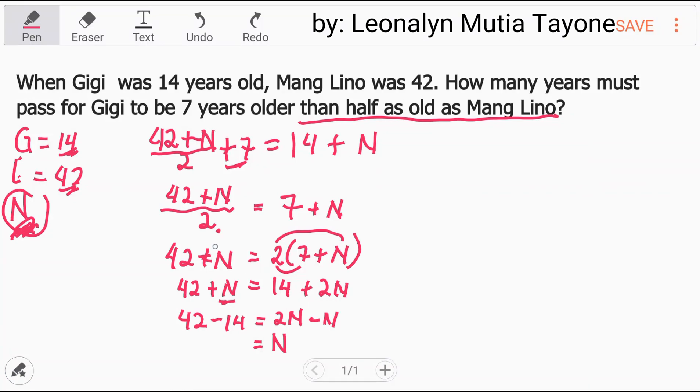42 minus 14 is 28. Now the question is how many years must pass for Gigi to be 7 years older than half as old as Mang Lino? The answer is 28.